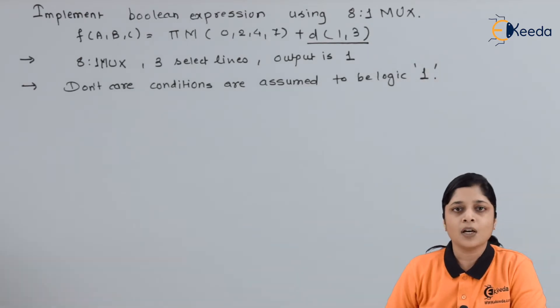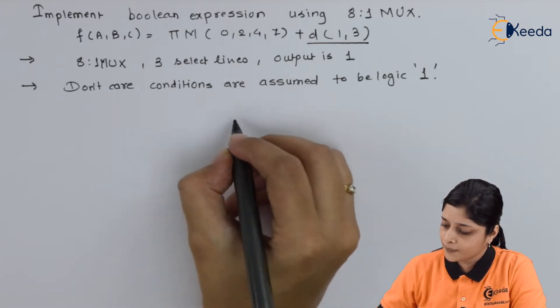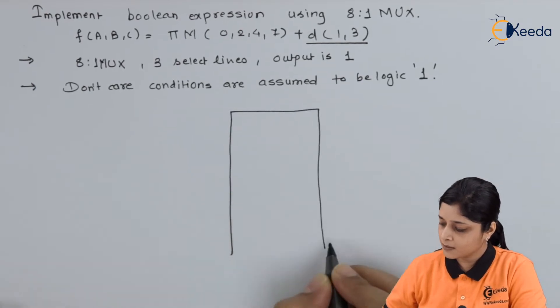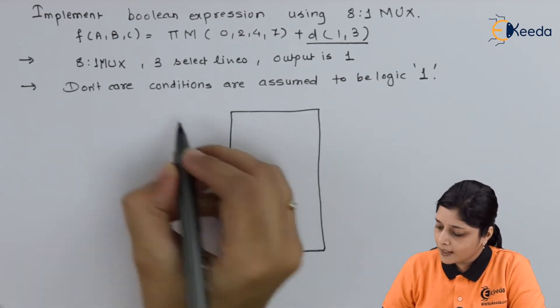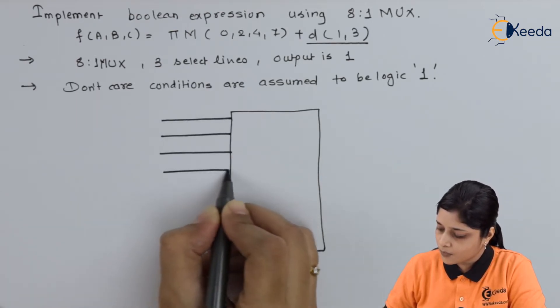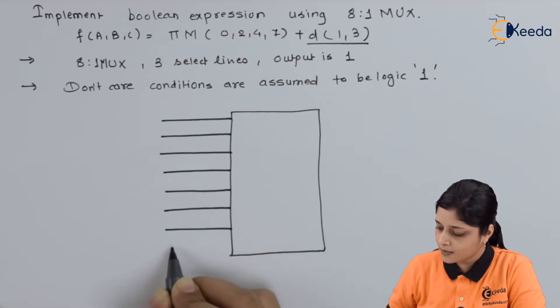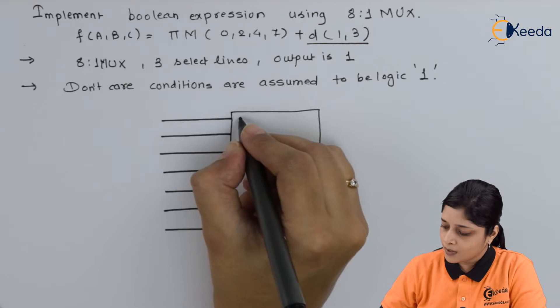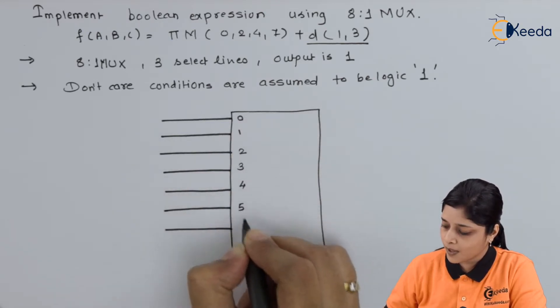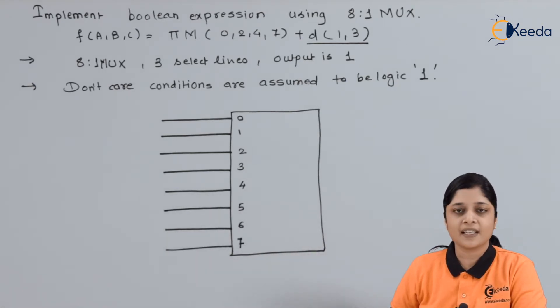Now we will draw the diagram of MUX. So while drawing the diagram, you will have here 8 inputs. 8 inputs 4, 5, 6, 7 and here we will write 0, 0, 1, 2, 3, 4, 5, 6 and 7. 0 to 7 means 8 inputs.